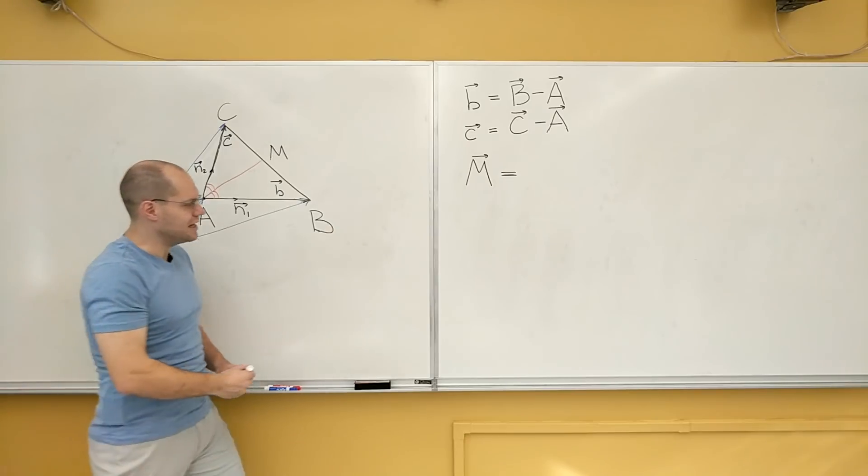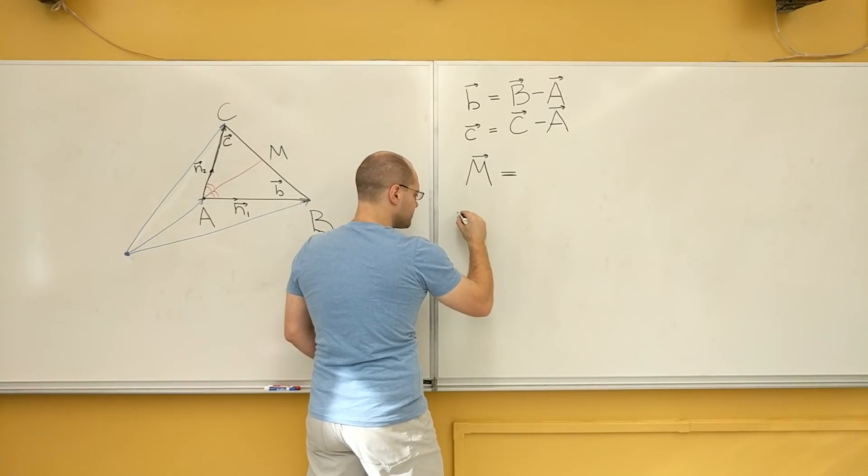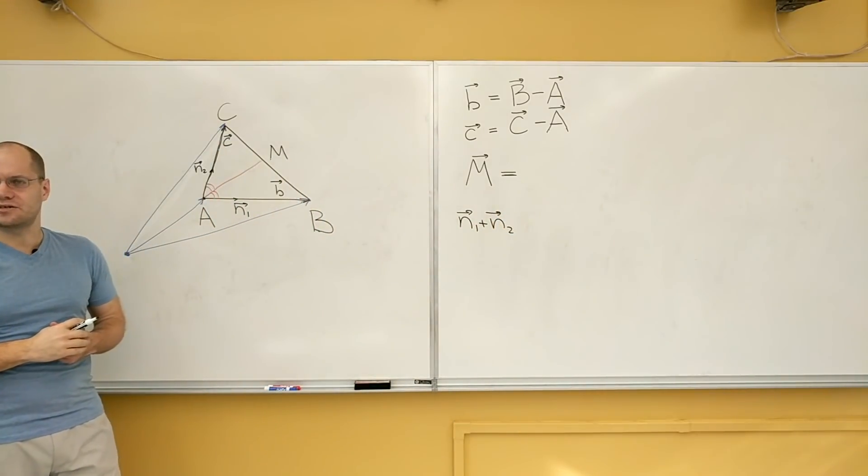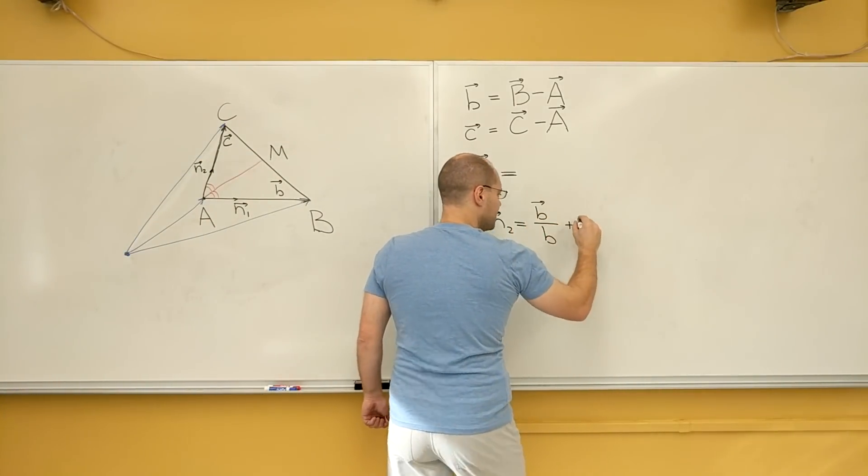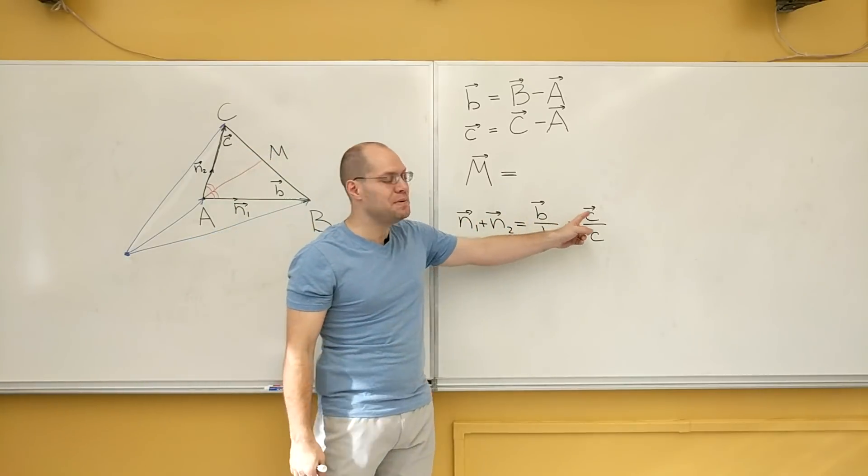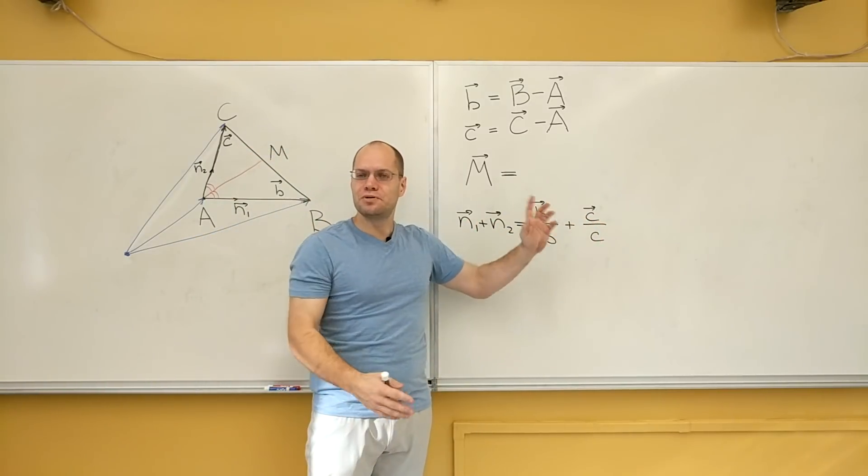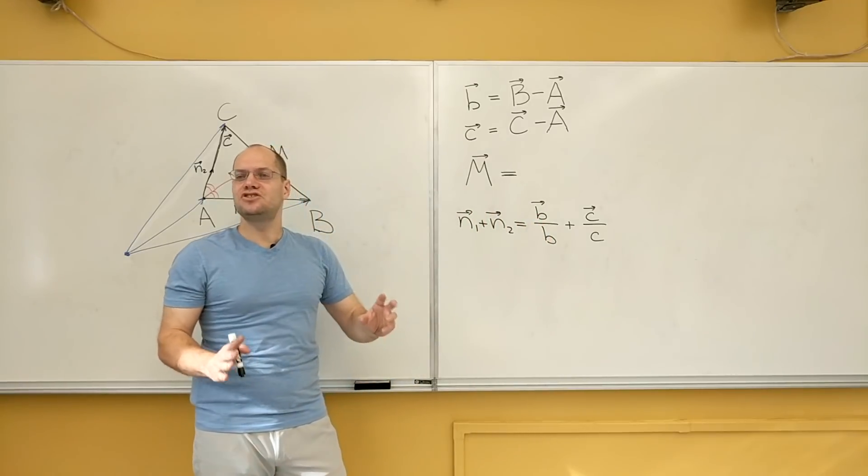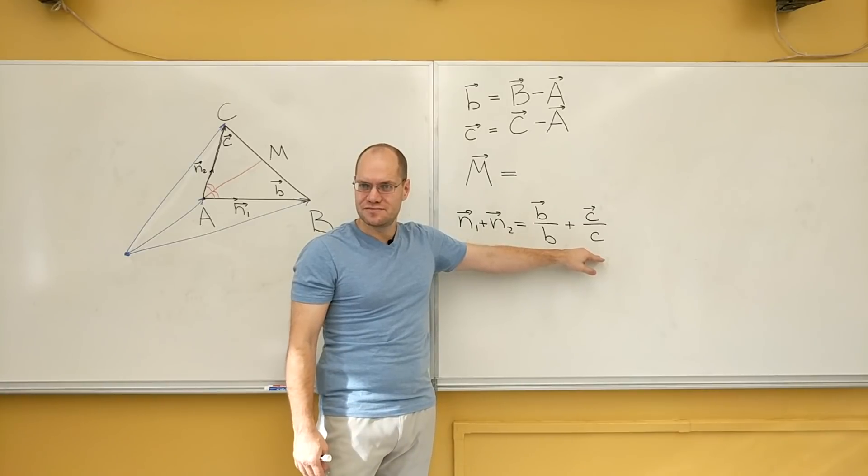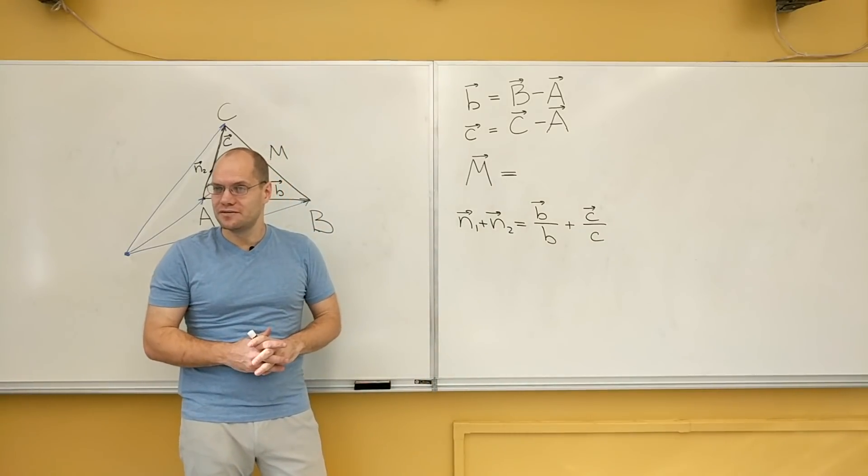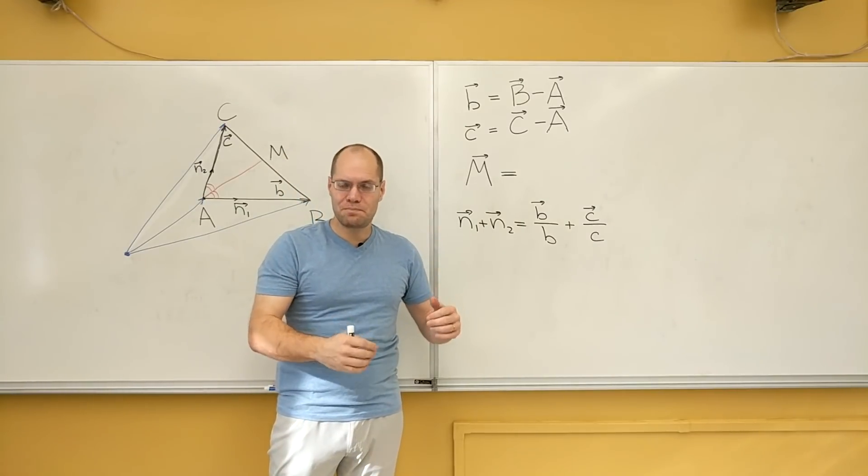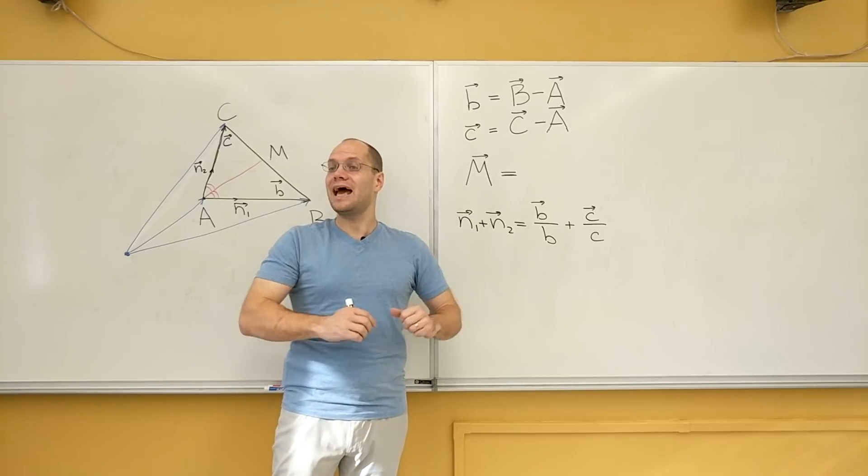So let's write it down. So here's our work. N1 plus N2. Here we have something pointing along the bisector, which equals, this expression gives us, is the proportions that we need to combine B and C to produce the bisector. The coefficients need to be proportional to 1 over b and 1 over c. But they have to add up to 1. So here are my coefficients that are proportional to 1 over b and 1 over c, but add up to 1.